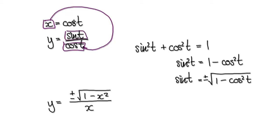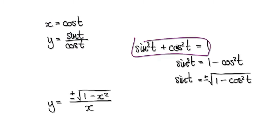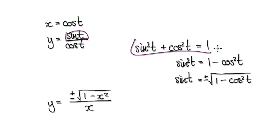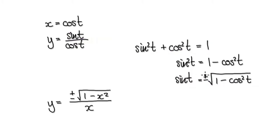But we need to sort out sine t. Looking at the Pythagorean identity, we need to somehow rewrite sine t in terms of x. Taking away cos squared from both sides gives us sine squared t equals 1 minus cos squared t. So when you square root, sine t equals plus or minus the square root of 1 minus cos squared t. So we can now replace sine t with this expression.